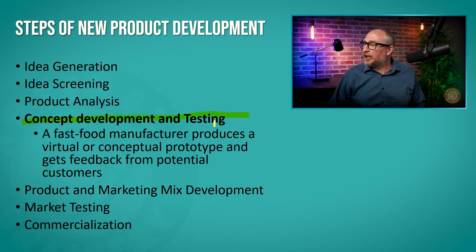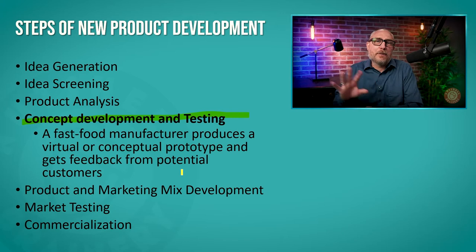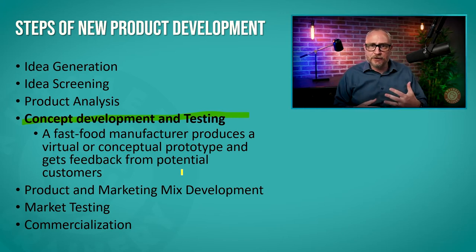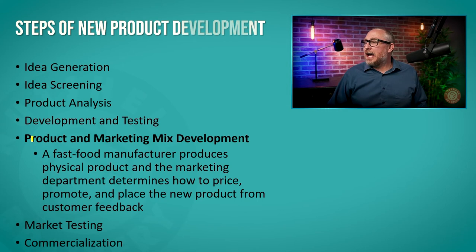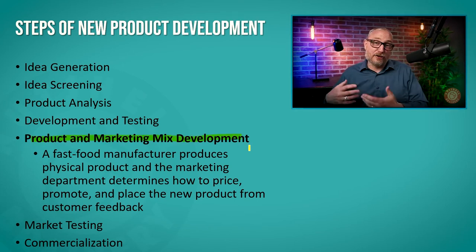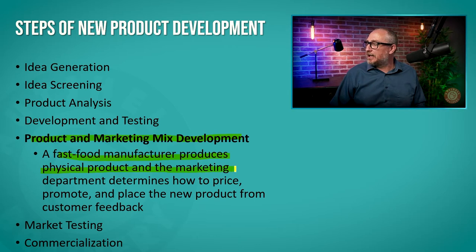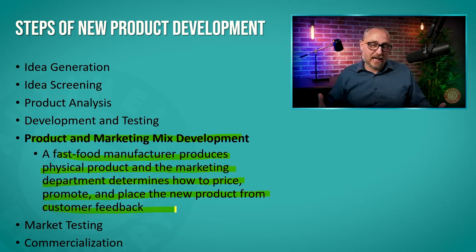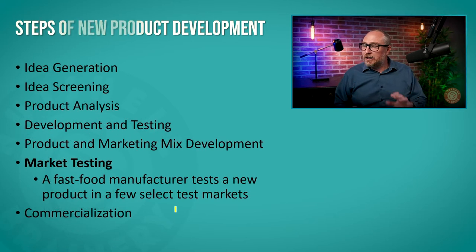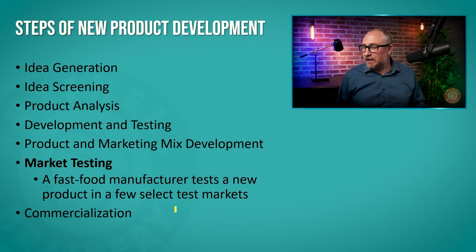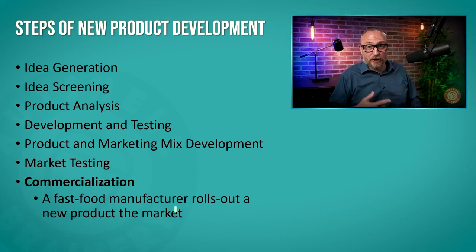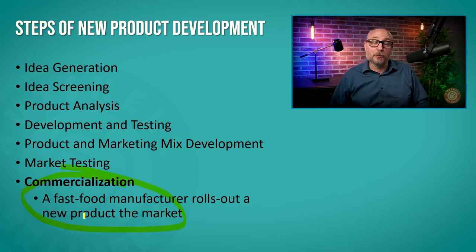Then you go ahead and develop it and test it — put it together, offer it in some test markets, do some pilots, and maybe a little promotional testing to see if people are really into the squid burger you're making in Japan. You develop your marketing and media mix. The fast food manufacturer produces a physical product and the marketing department determines how to price, promote, and place it to get customer feedback. Then you test market heavily and, once everything's working, you commercialize it.